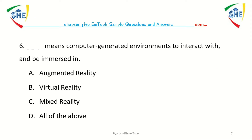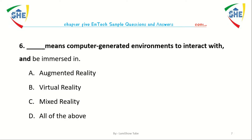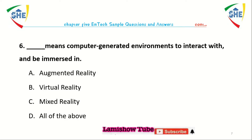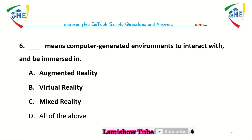Question number 6: Dash means a computer-generated environment to interact with and be immersed in. Options: Virtual reality, with choices including all of the above.